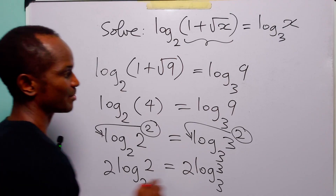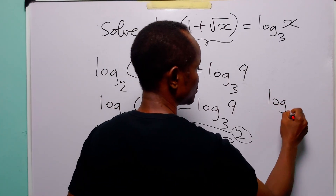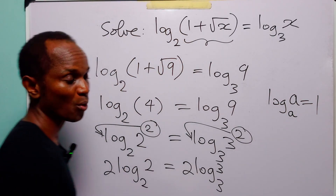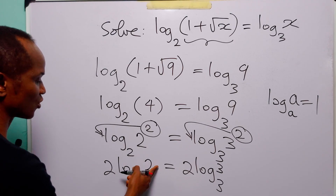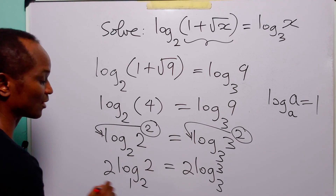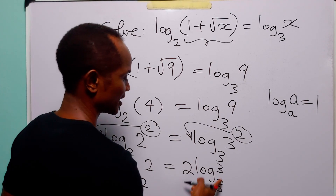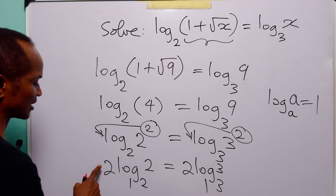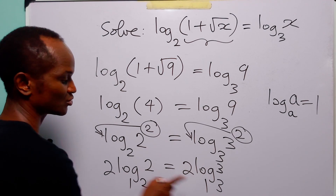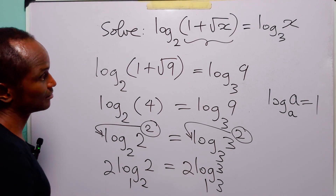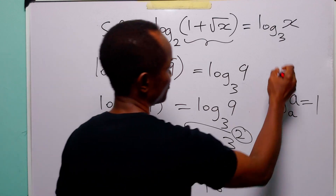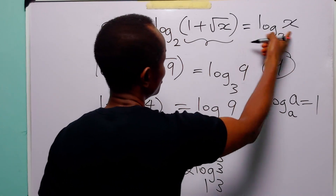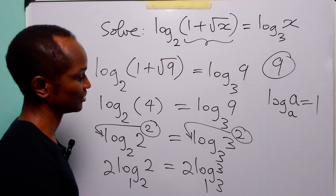Now, log to base a of a is equal to one, so log to base two of two is equal to one and log to base three of three is equal to one. We have two times one is equal to two times one, which confirms that nine is indeed the solution to this logarithmic equation.